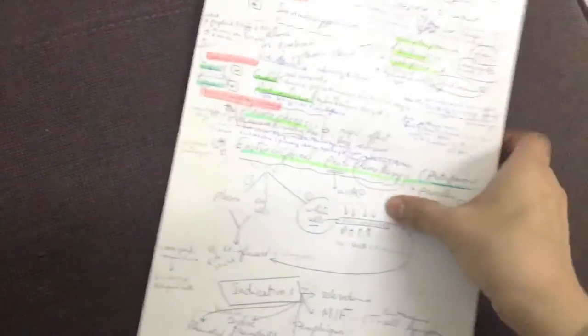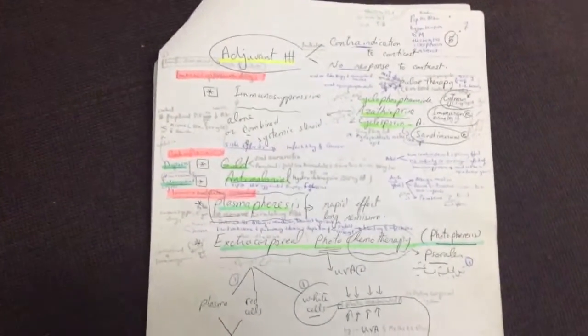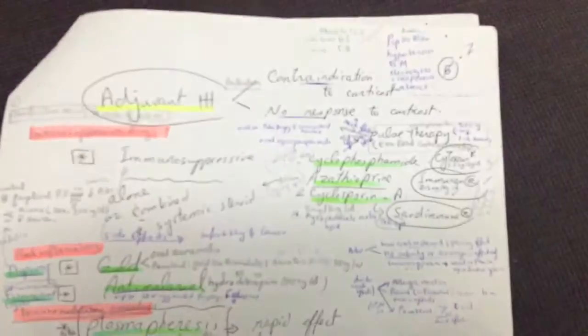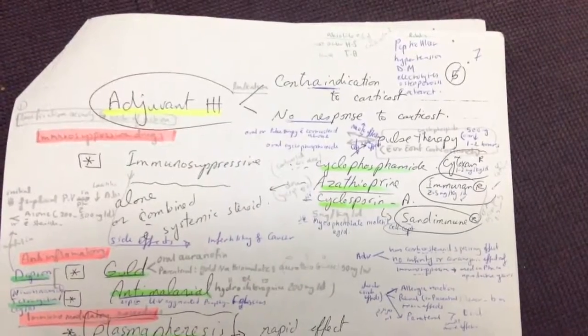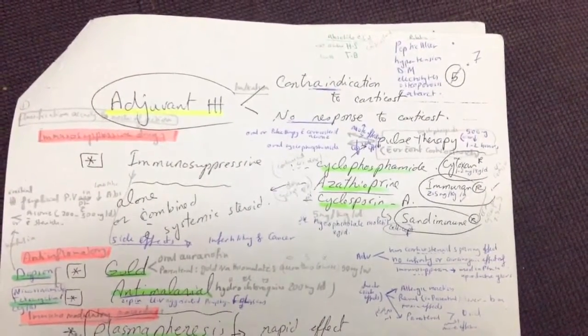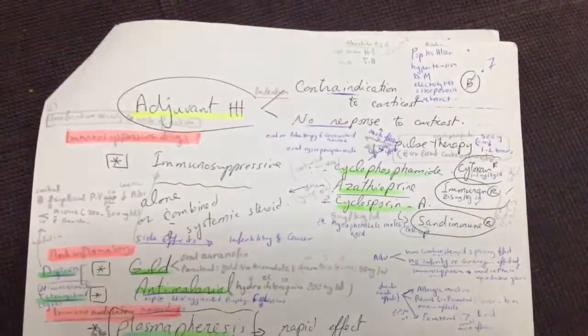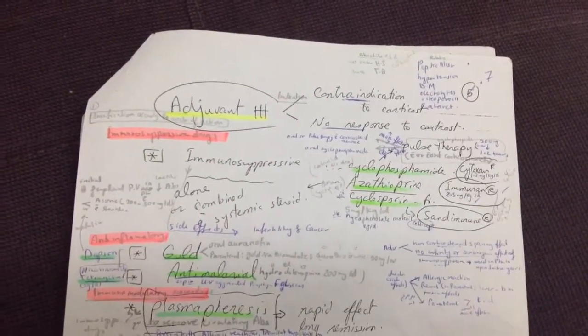Regarding adjuvant treatment: when is it given? If there is a contraindication to corticosteroids or no response to corticosteroids. Absolute contraindications include ocular herpes simplex or tuberculosis. Relative contraindications include peptic ulcer, hypertension, diabetes, electrolyte imbalance, osteoporosis, and cataract. Adjuvant treatment is also given if there is no response to corticosteroids.